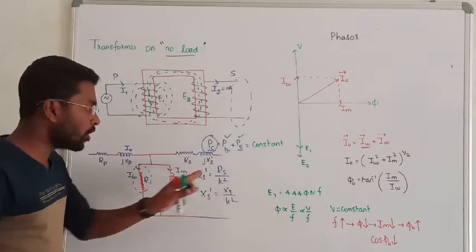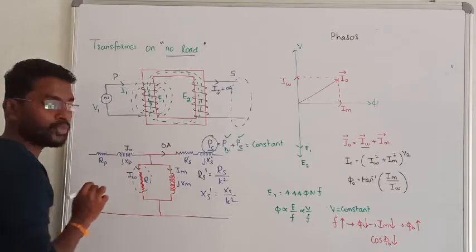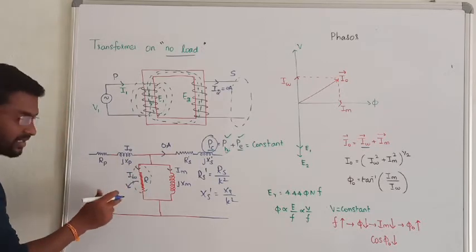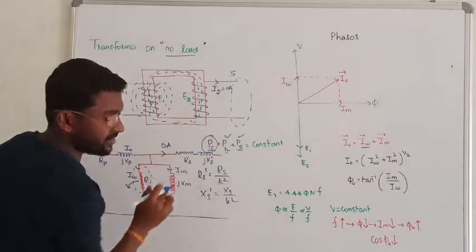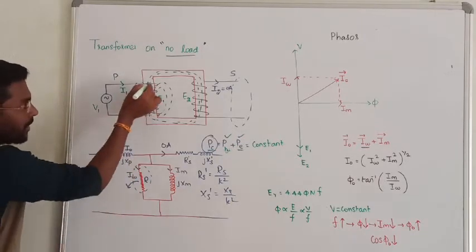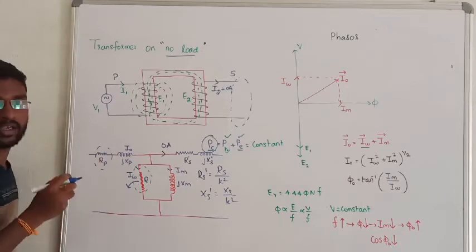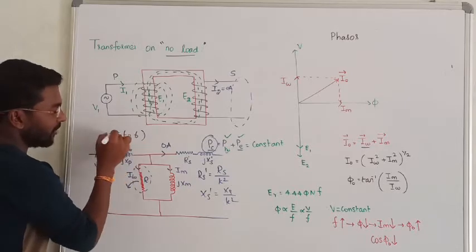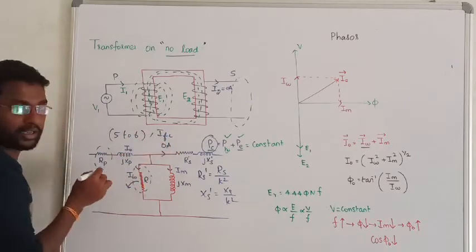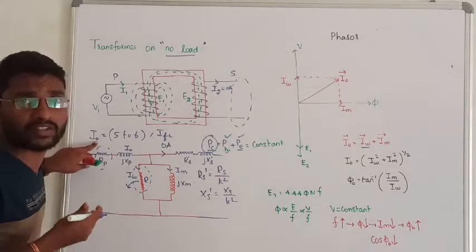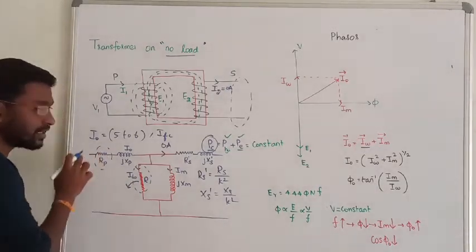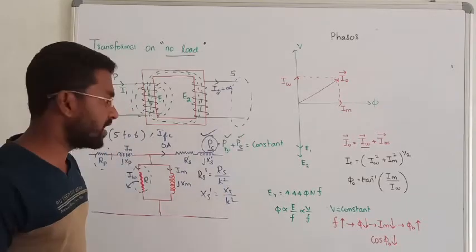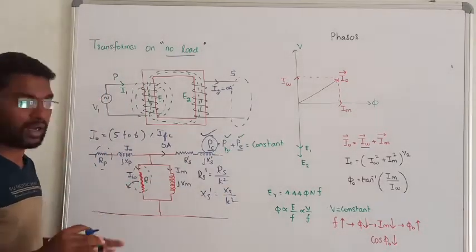Under no-load, the secondary current is 0 amperes. In the primary equivalent circuit, the core resistance offers hysteresis and eddy current losses. There will also be copper loss in the primary winding, but since the no-load current is very small — approximately 5 to 6% of full load current — the copper loss is also very small and is usually negligible. So under no-load, we consider only core loss; copper loss at no-load is ignored.